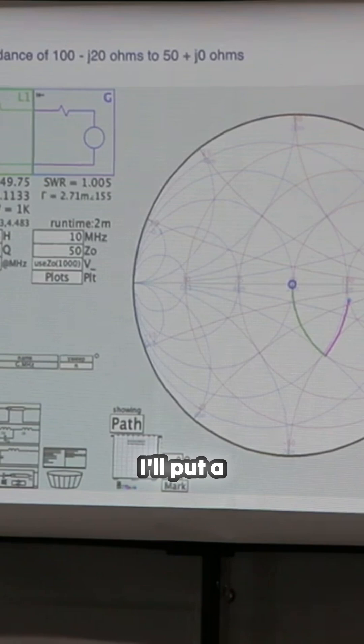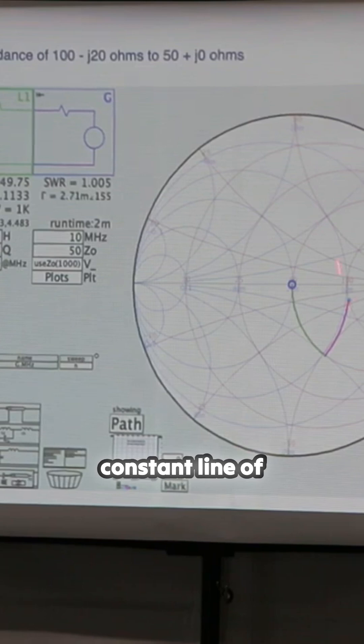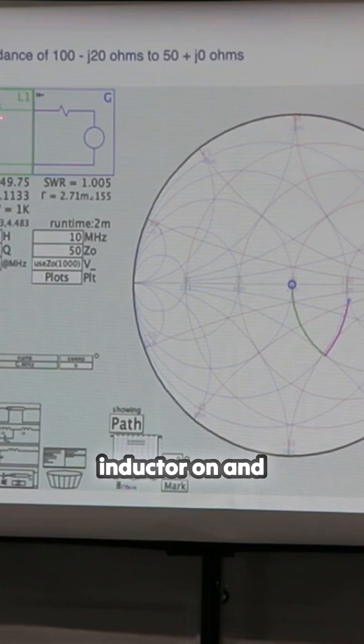Here we go. I'll put a capacitor in parallel. It will follow the constant line of conductance around to this point, where I will then put an inductor on, and it will follow the constant line of impedance or resistance back to 50 ohms.